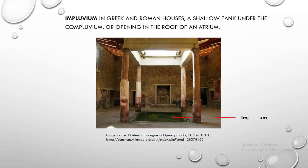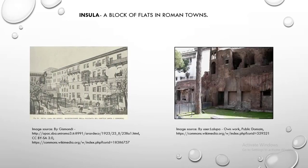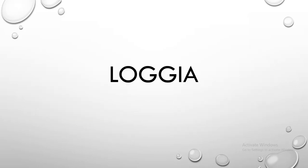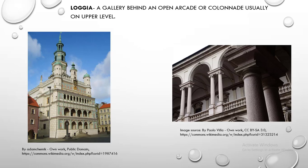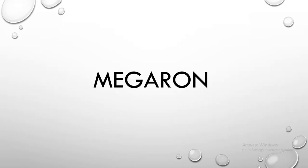Impluvium. Impluvium is, in Greek and Roman houses, a shallow tank under the compluvium or opening in the roof of an atrium. Insula. Insula is a block of flats in Roman towns. Loggia. Loggia is a gallery behind an open arcade or colonnade, usually on an upper level. Mastaba. Mastaba is an ancient Egyptian rectangular, flat-topped funerary mound with battered sides, covering the burial chamber below ground.